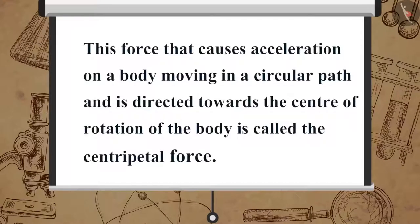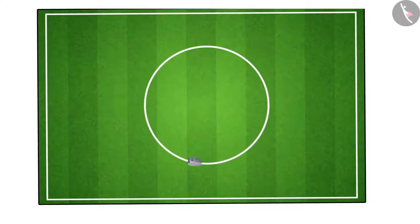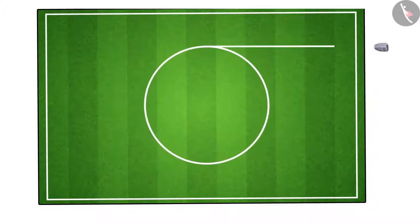The force which maintains this acceleration and keeps the stone moving in a circular path acts towards the center. This force that causes acceleration on a body moving in a circular path and is directed towards the center of rotation of the body is called the centripetal force. If there is no centripetal force, the stone will fly in a straight line, forming a tangent to the circular path.